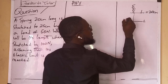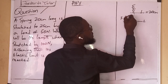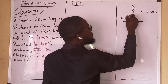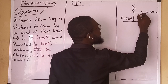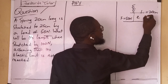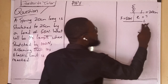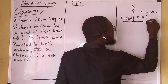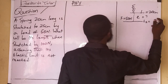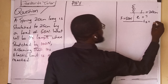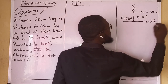The 50 newton force creates an extension that we don't know yet, and then we get a new length — length two. What is the new length? It is 25 centimeters.